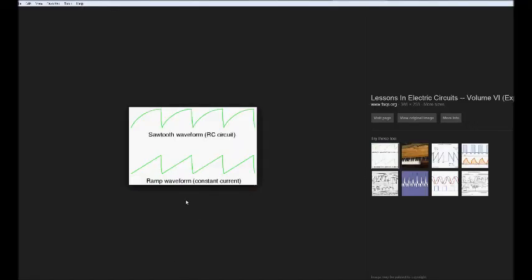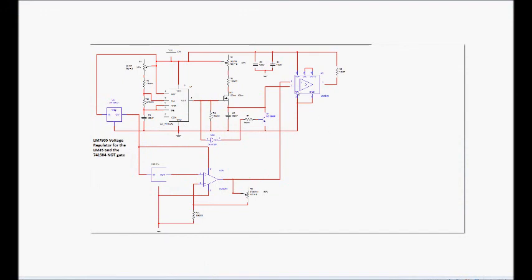So, if we go here, this is a ramp waveform here. And that's produced by constant current charging. Now, the reason for producing this ramp waveform is because it's going to be used with a comparator.